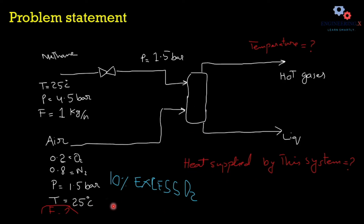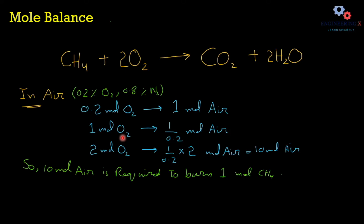First, we are going to calculate the air required to burn 1 kg per hour of methane. For that, we simply apply a mole balance. Looking at the balanced chemical reaction, you can see that 2 moles of oxygen are required theoretically to completely burn 1 mole of methane.